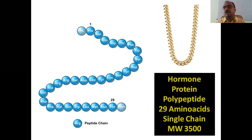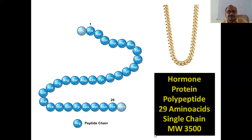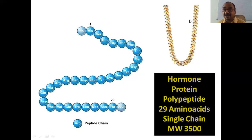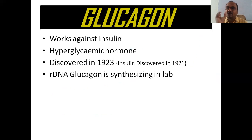Glucagon is a protein. It consists of 29 amino acids — that's why it is called a protein, since proteins are made up of amino acids. See here: one, two, three, four, up to 29. It is a single chain, whereas insulin is a double chain. Glucagon works against insulin. Its molecular weight is 3500 — just a small chain.